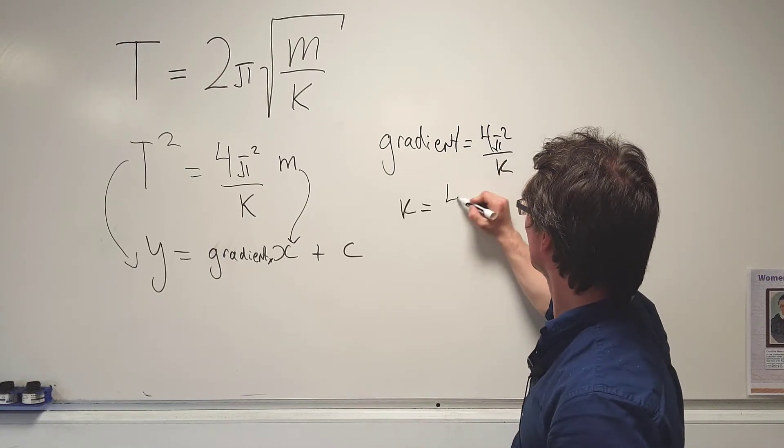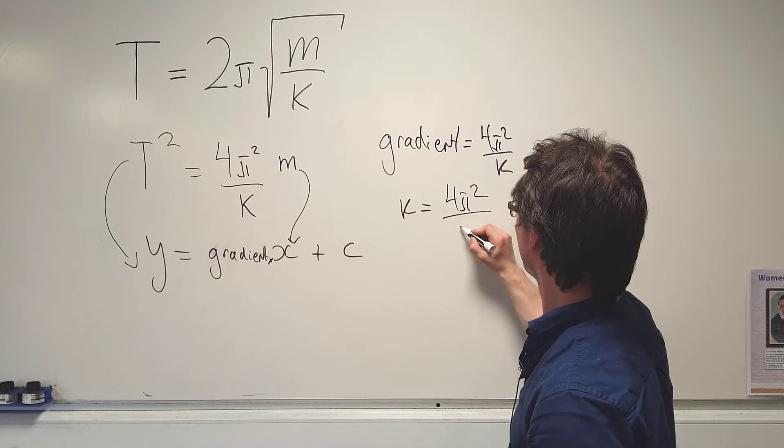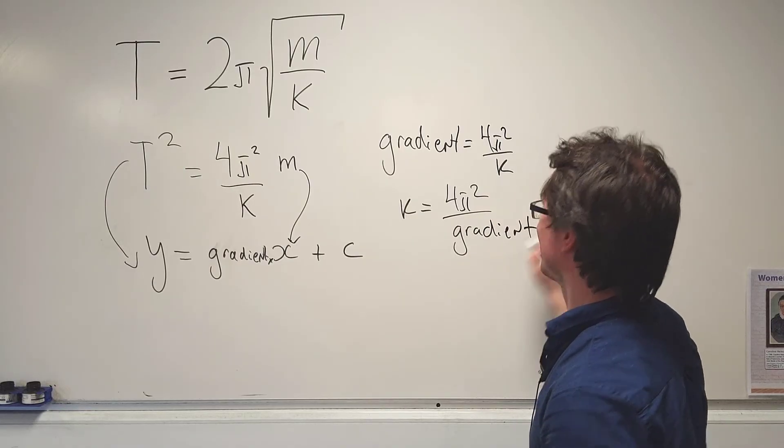Meaning that k will be equal to 4π² divided by the gradient.